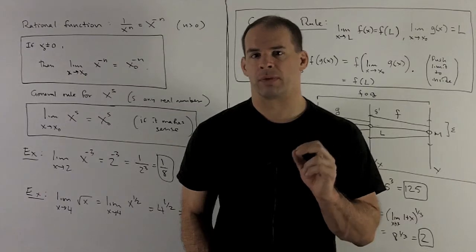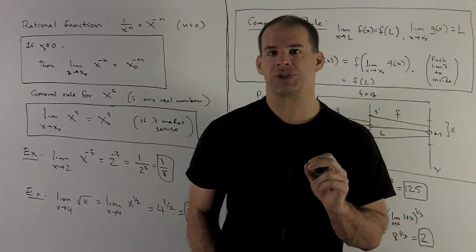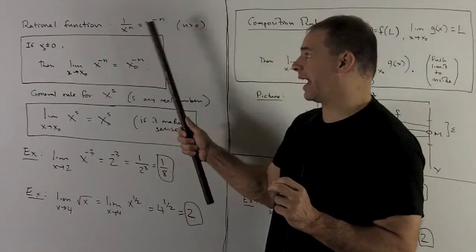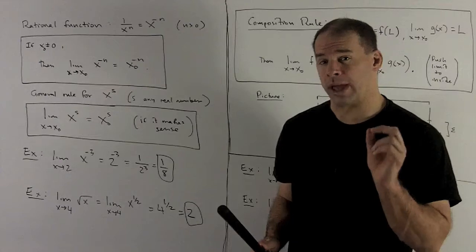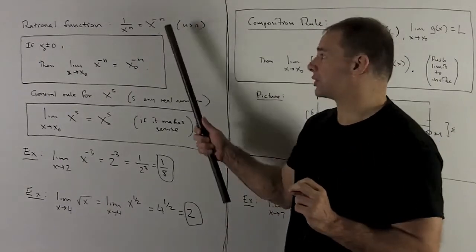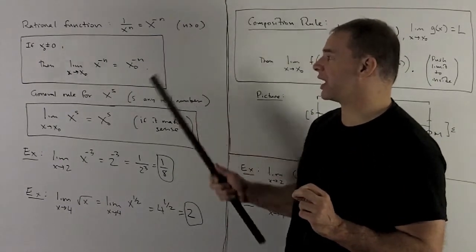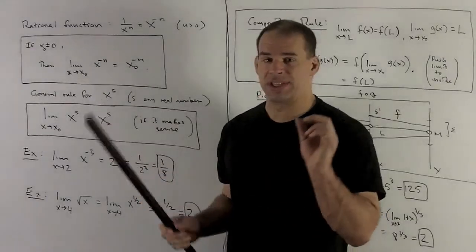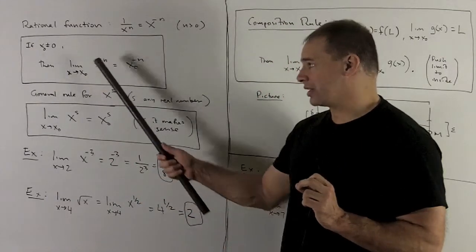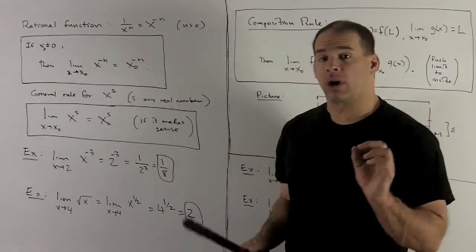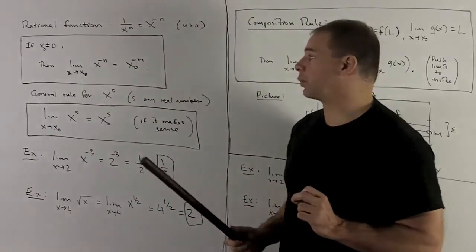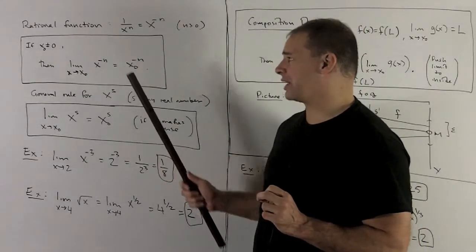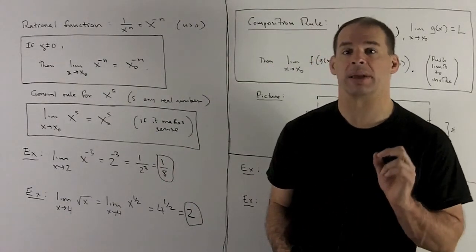As a special case of the rule for rational functions, I can consider 1 over x to the n, where n is a positive integer, so it's going to be x to the minus n. Then we have, if our x₀ is non-zero, we still have our evaluation rule. The limit as x goes to x₀ of x to the minus n is just x₀ to the minus n.